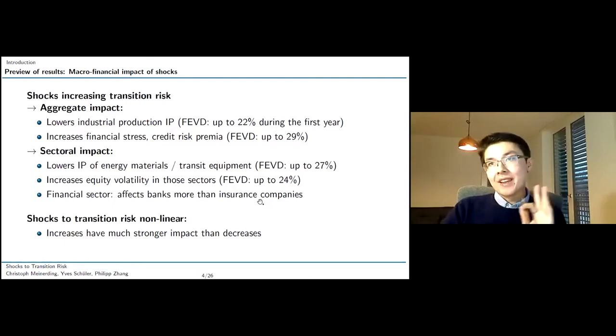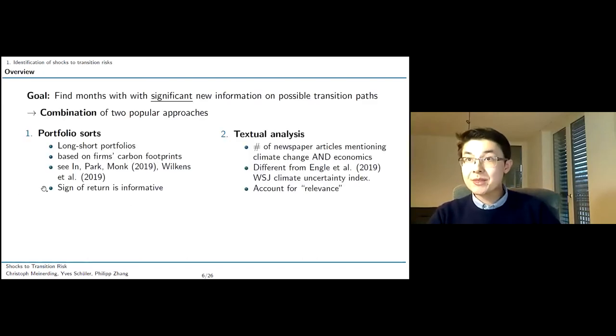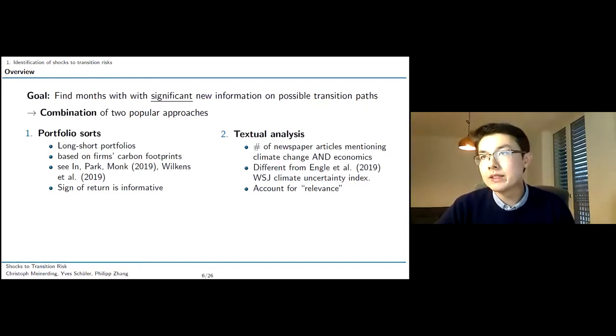So that's a bird's eye view of what we do. Now I get into a little bit more detail of how we actually construct our shocks. How do we identify these events? We combine two approaches: portfolio analysis of portfolio sorts with textural analysis. Both methods are fairly well known, fairly well established. But combining those two is, to our knowledge, a novel approach. In our portfolio sorts part of our procedure, it's fairly standard. We sort our companies into long short portfolios with a sorting variable representing some kind of carbon footprint. Basically like carbon emissions and energy usage.